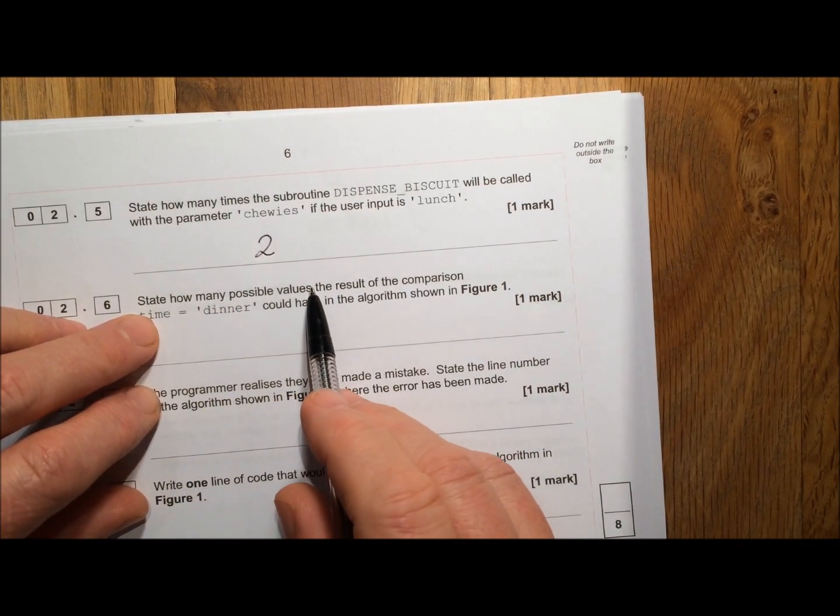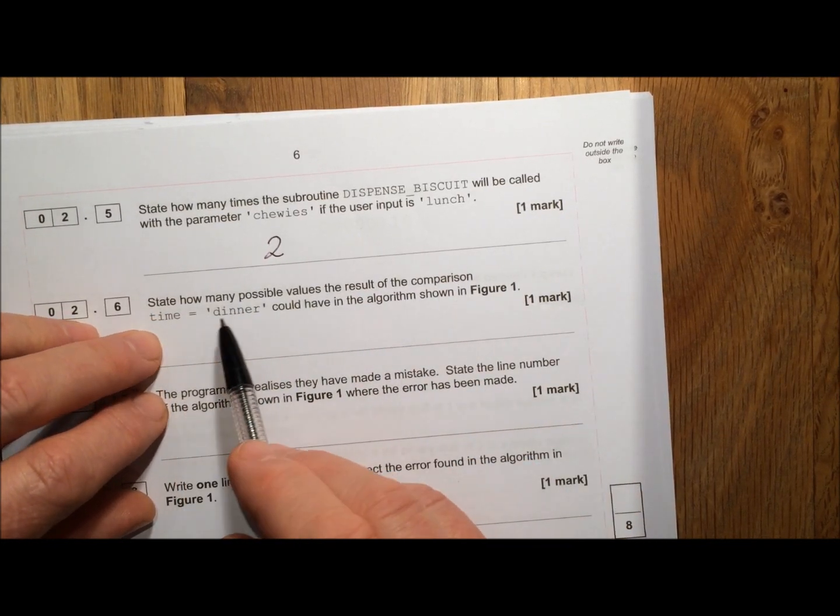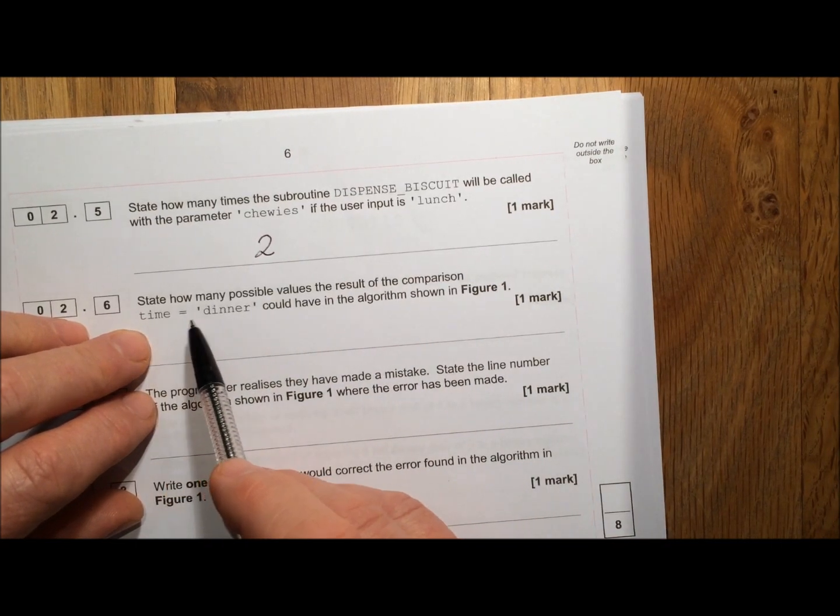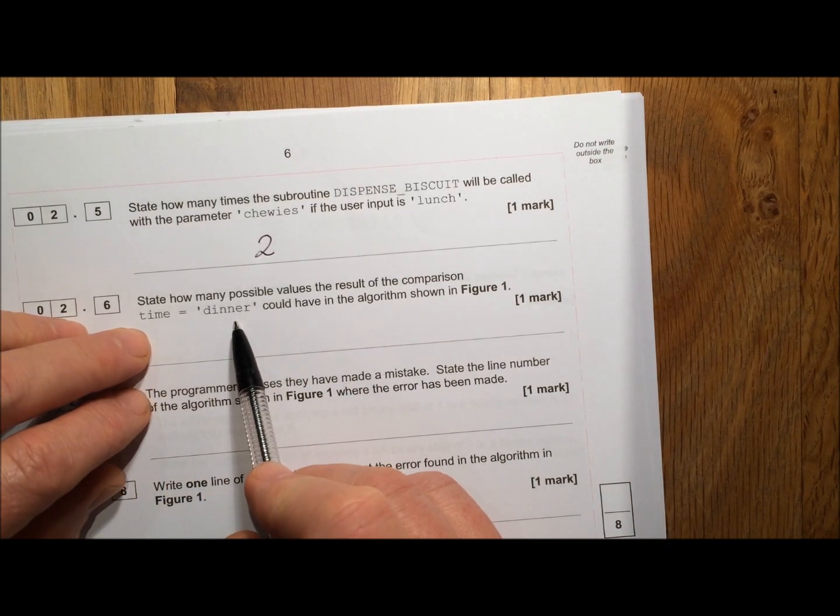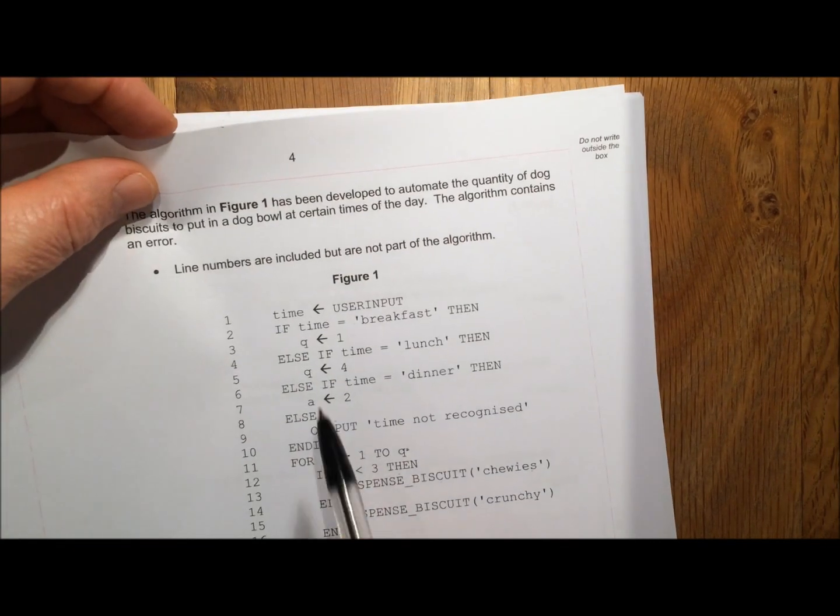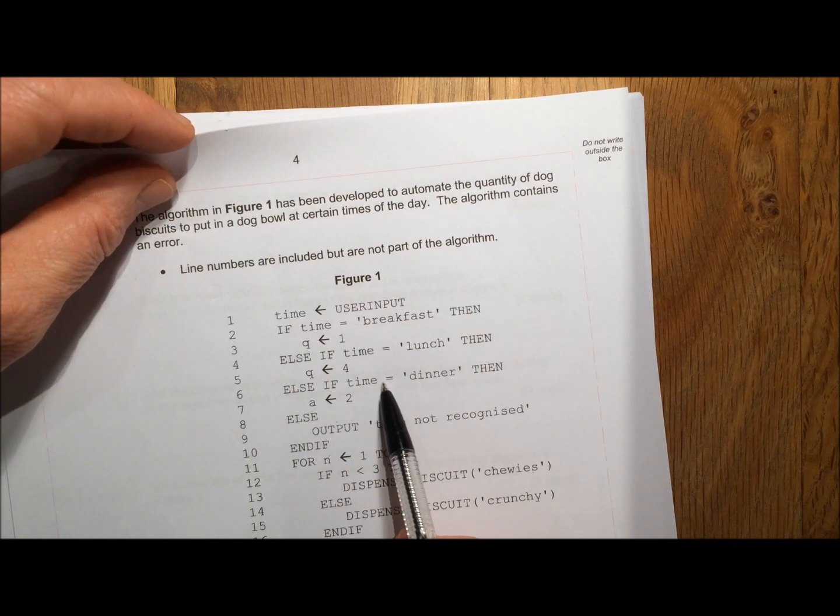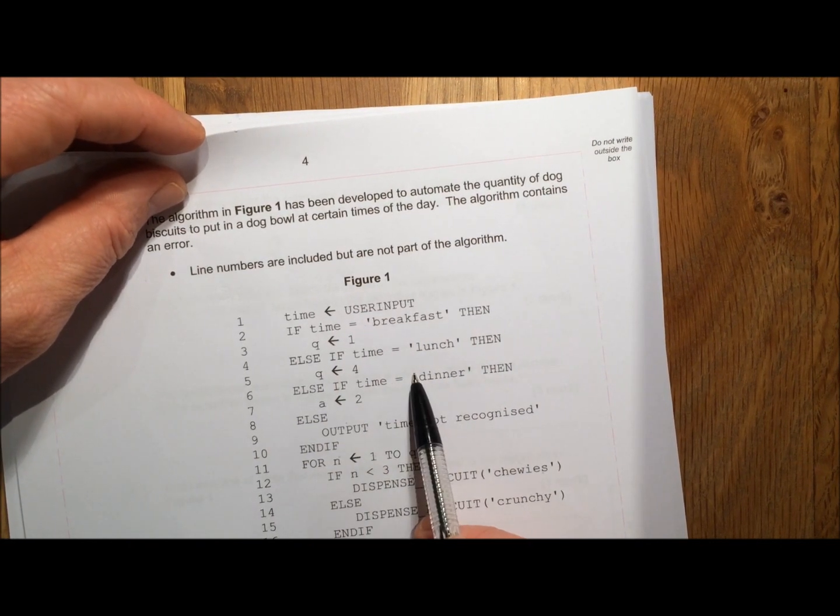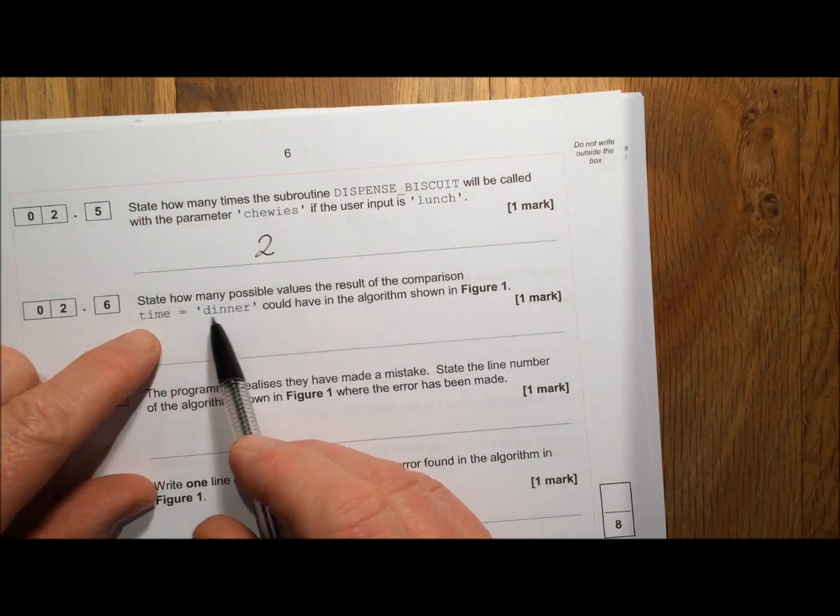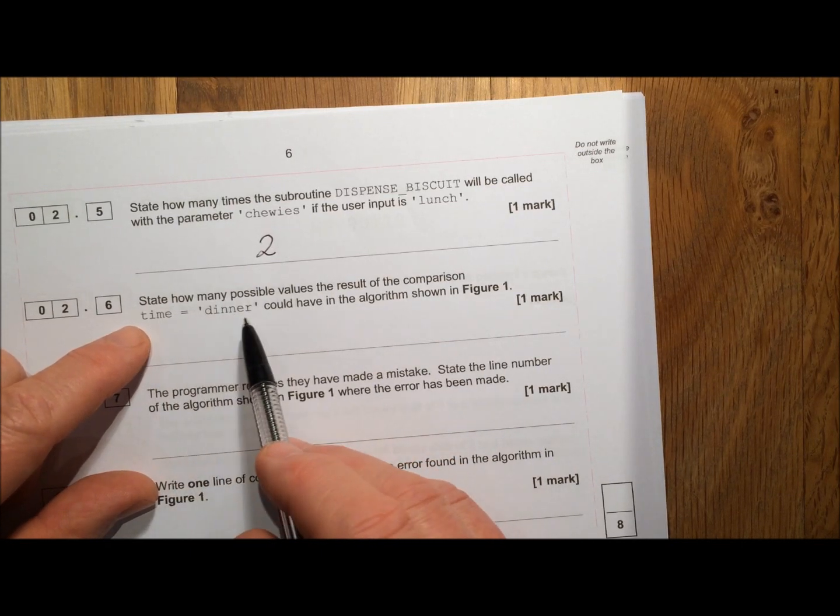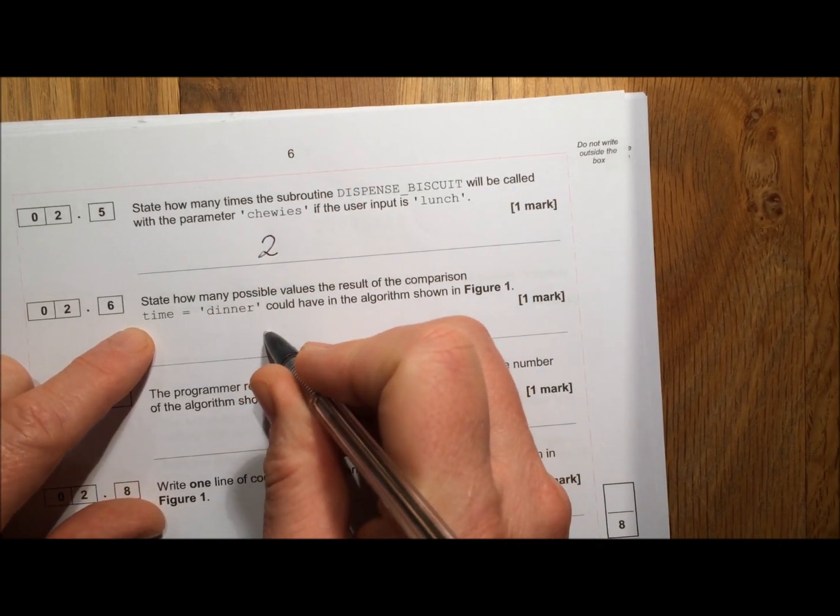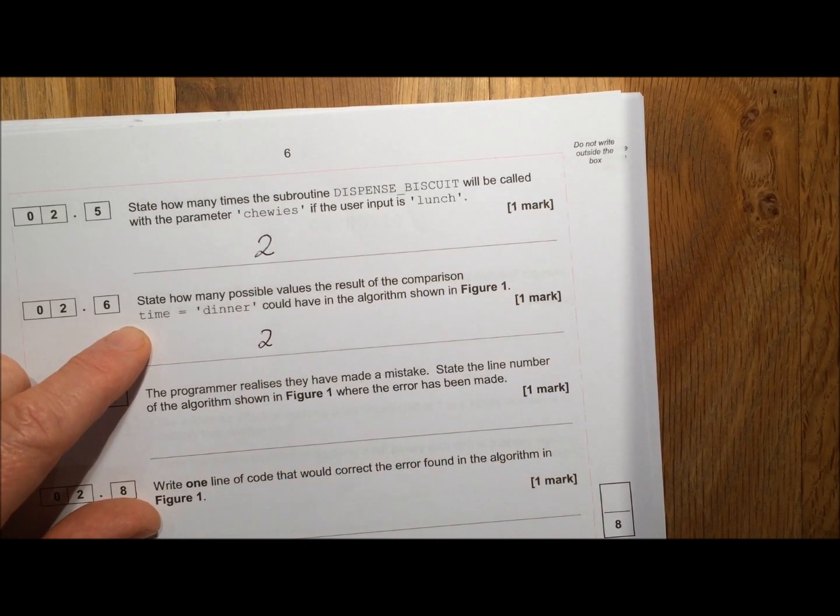State how many possible values the result of the comparison time equals dinner could have in the algorithm shown. Now time equals dinner is a statement that can only be true or false. If time equals dinner, is time equal to dinner? Or is time not equal to dinner? Those are the only two choices you've got. This is a boolean expression. In other words, it's an expression that can only give an answer true or false. So it has two possible values, true or false.